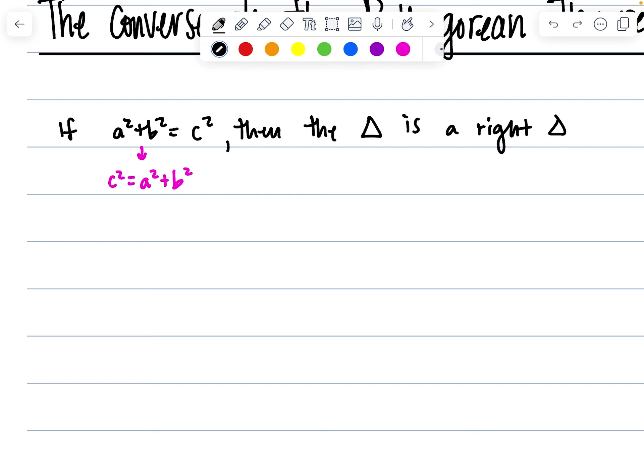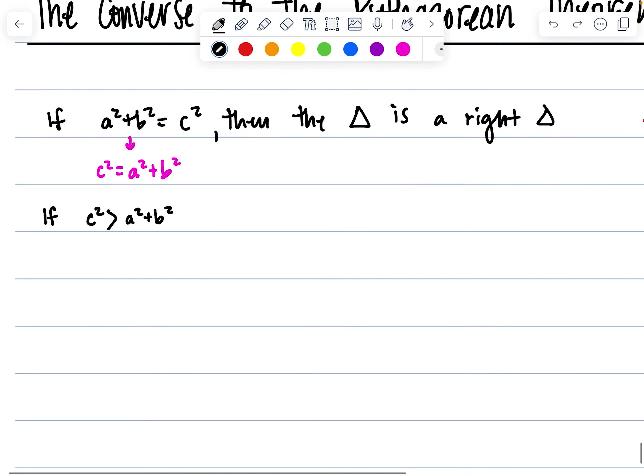So here's the other part. If c squared is greater than a squared plus b squared, as I previously said, if it's not equal to, then the hypotenuse squared is either greater than or it's going to be less than. And we're going to say if that c squared, if that hypotenuse is greater than a squared plus b squared, then the triangle is obtuse.